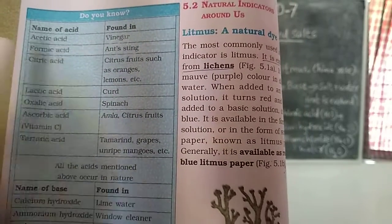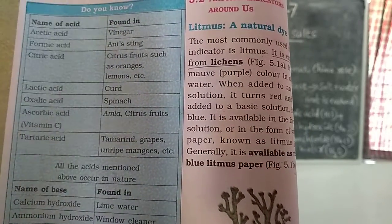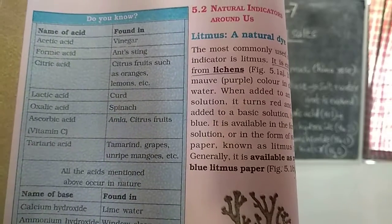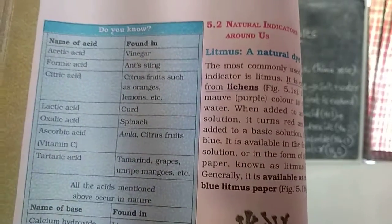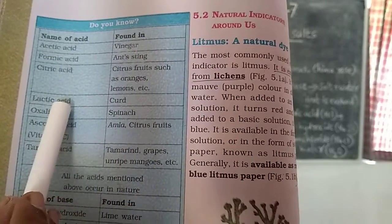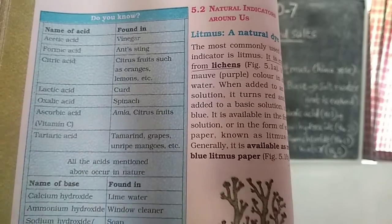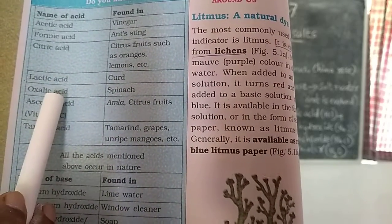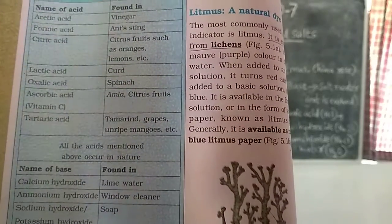Citric acid is found in citrus fruits like orange and lemon. Lactic acid is found in curd. Oxalic acid is found in spinach.